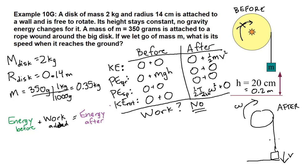All right, there are so many zeros here. I am not going to write them all out, but the energy before term only has mgh in it, the work added term is a zero, and then the energy after has two total terms in it: one-half the tiny mass times v squared plus one-half the disk's moment of inertia times omega squared.